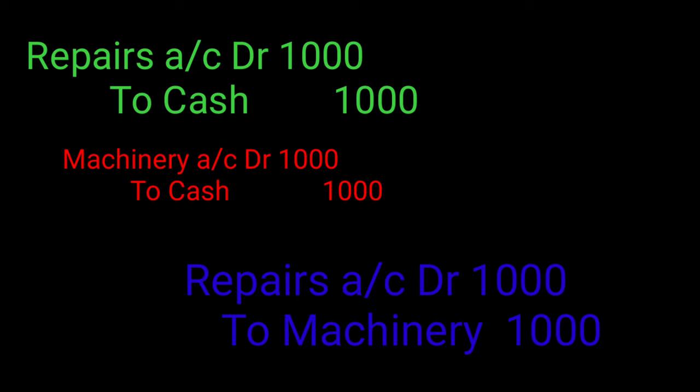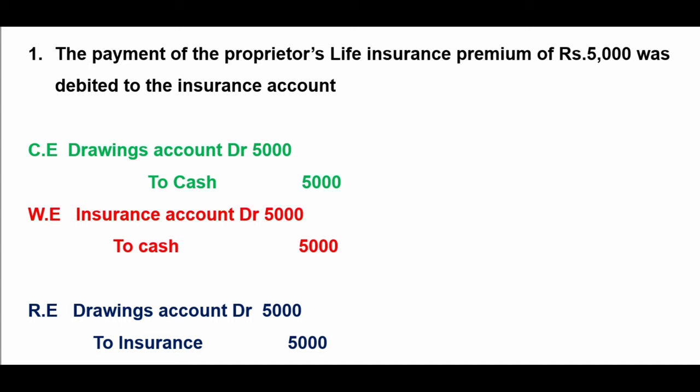Another example: payment of the proprietor's life insurance premium of 5,000 was debited to insurance account. The correct journal entry should be drawings account debit to cash, since it's a proprietor's personal expense. But it was wrongly treated as a business expense under insurance account. So the rectifying entry will be: drawings account debit to insurance — 5,000.